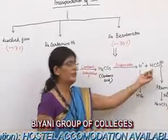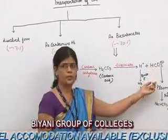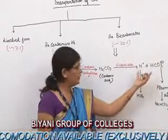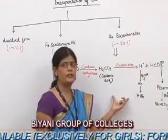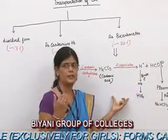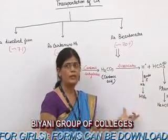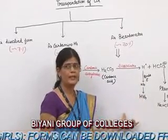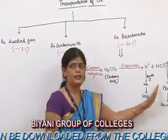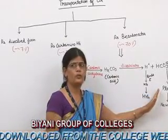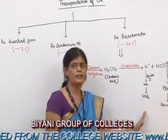When bicarbonate ion passes out from erythrocytes, the electronegativity of RBC or erythrocytes increases. To restore this balance, chloride ion enters into RBC from plasma, and this is known as the chloride shift or Heldin's effect.